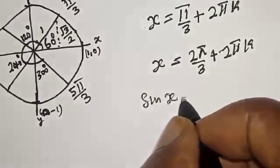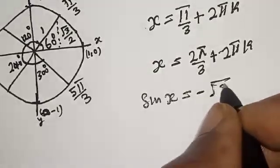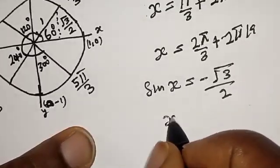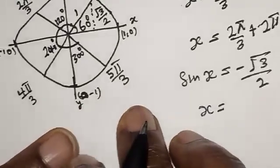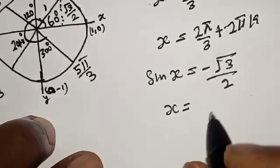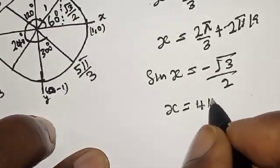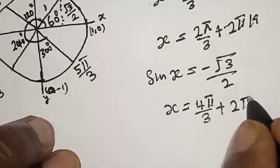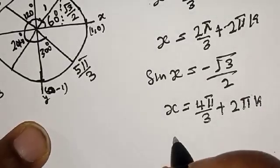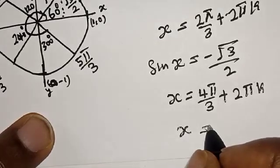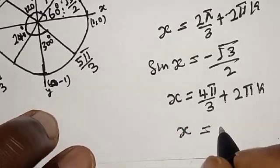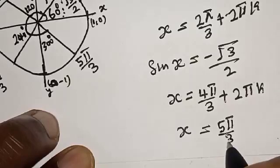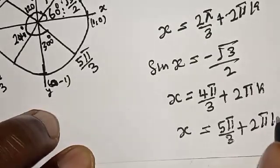So the solutions for sinx = ±√3/2 are: x = π/3 + 2πn, x = 2π/3 + 2πn (above the plane), x = 4π/3 + 2πn, and x = 5π/3 + 2πn (below the plane), where n is an integer constant.